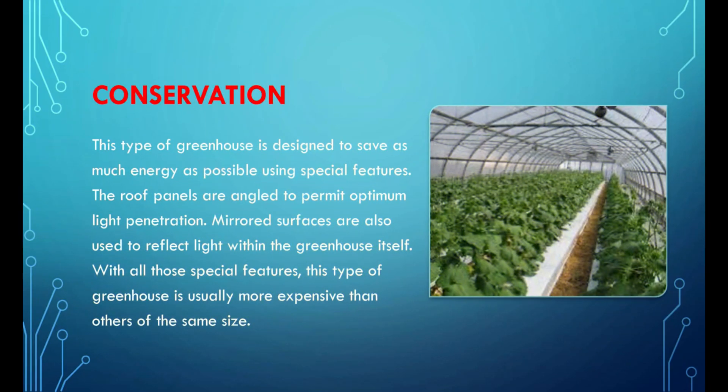The conservation greenhouse is designed to save as much energy as possible using special features. The roof panels are angled to permit optimum light penetration. Mirrored surfaces are also used to reflect light within the greenhouse itself. With all those special features, this type of greenhouse is usually more expensive than others of the same size.